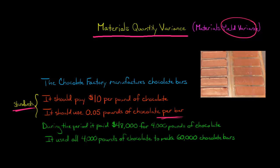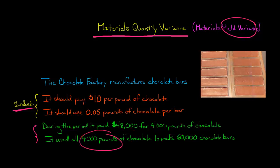Now, what actually happens during the period is the company paid $48,000 for 4,000 pounds of chocolate, and then it used all 4,000 pounds of chocolate — 100% of it — to make 60,000 chocolate bars.